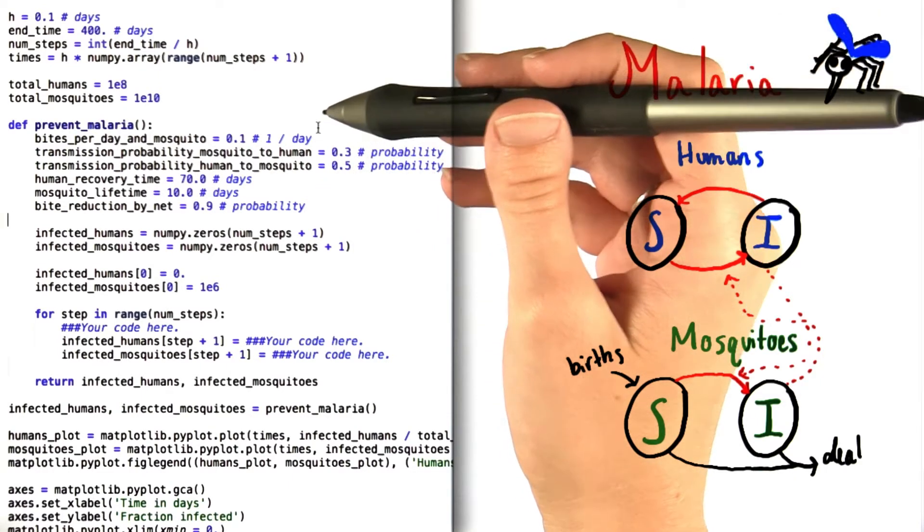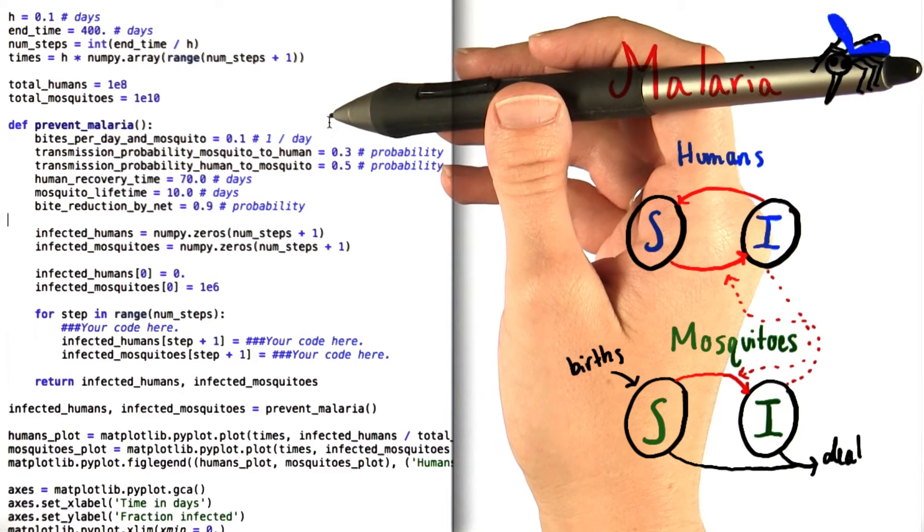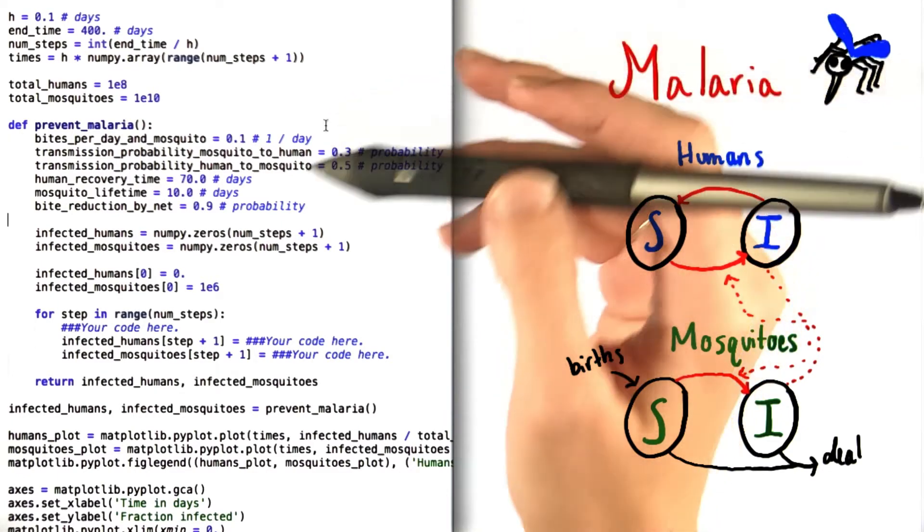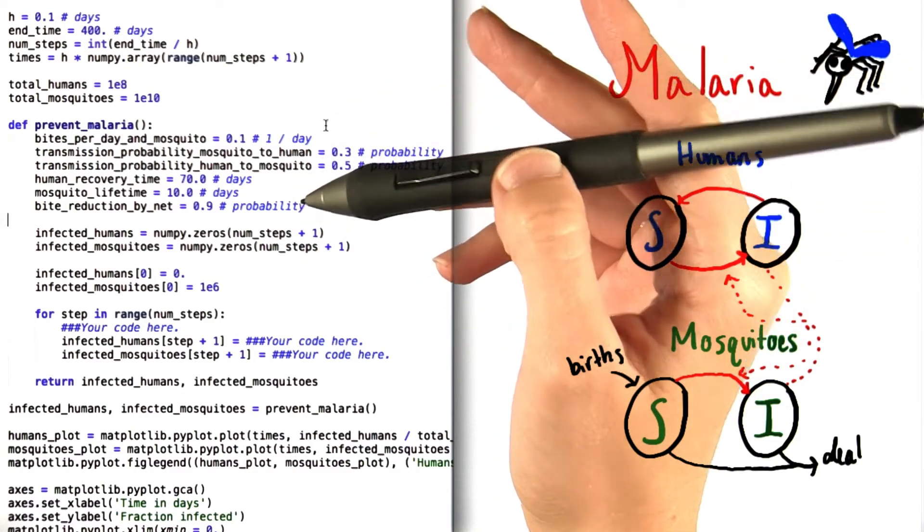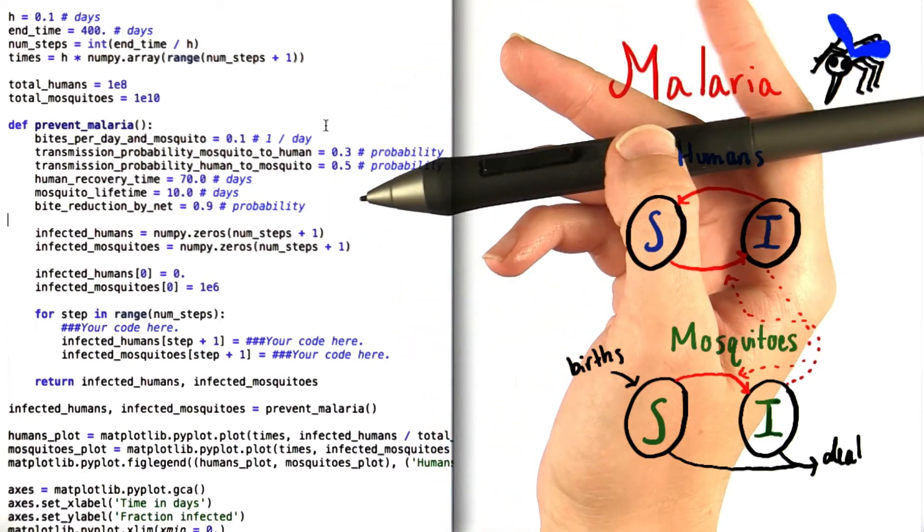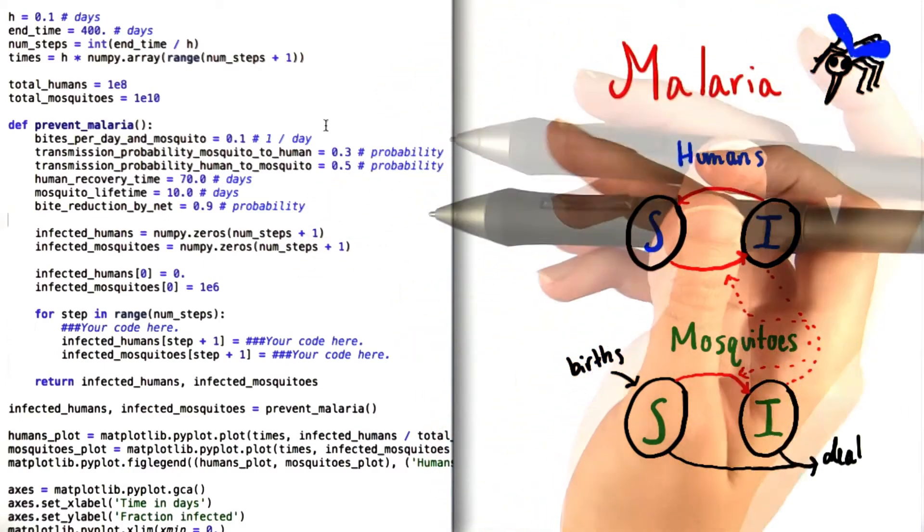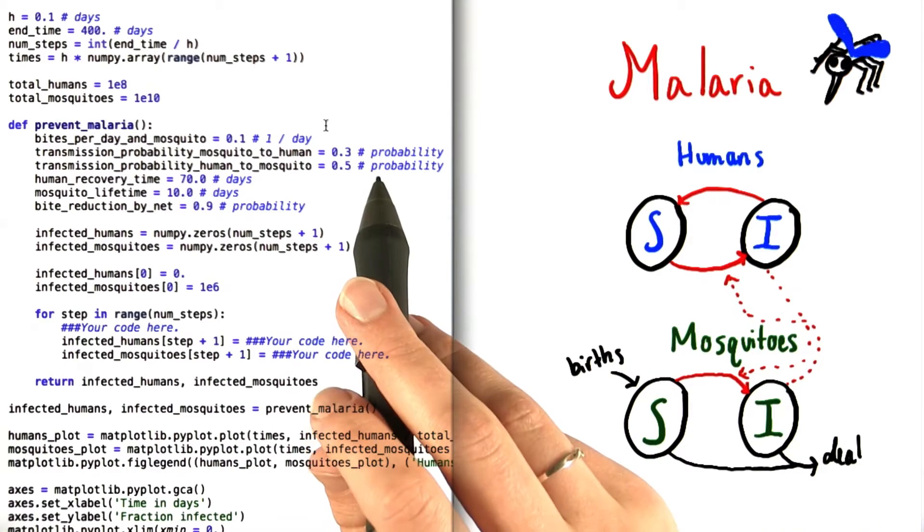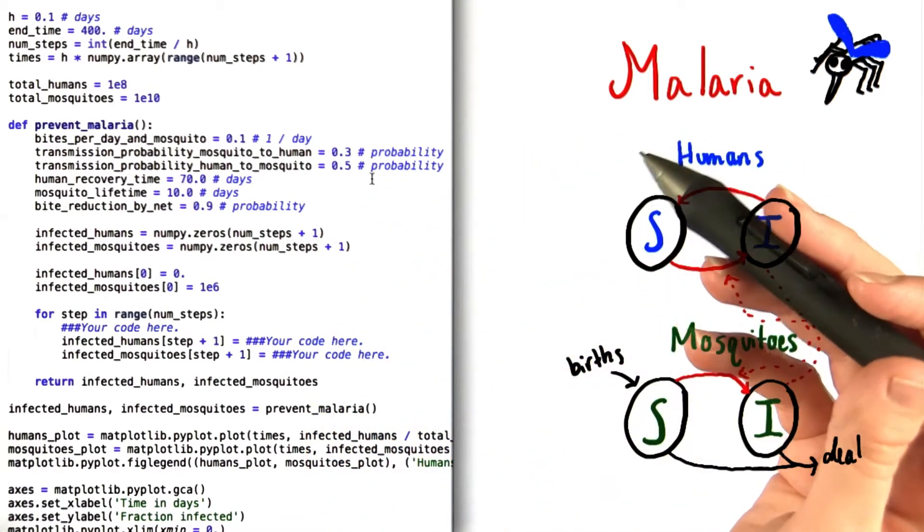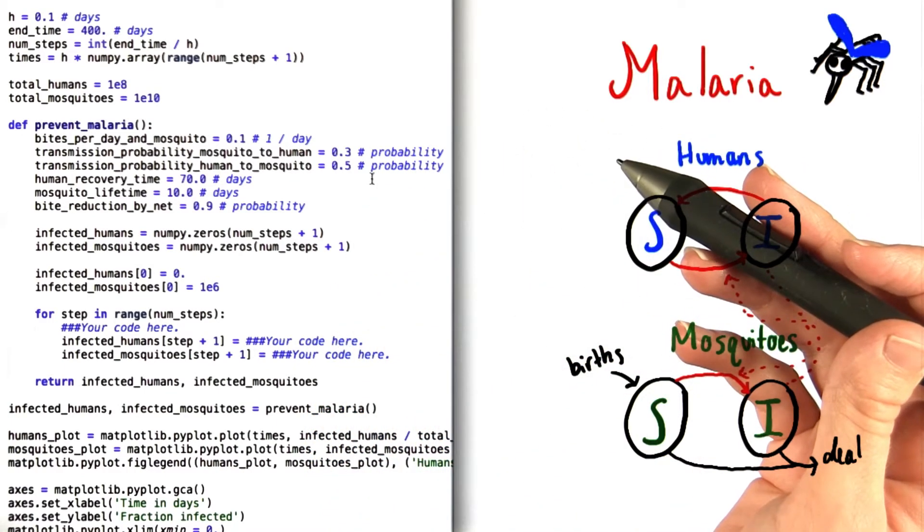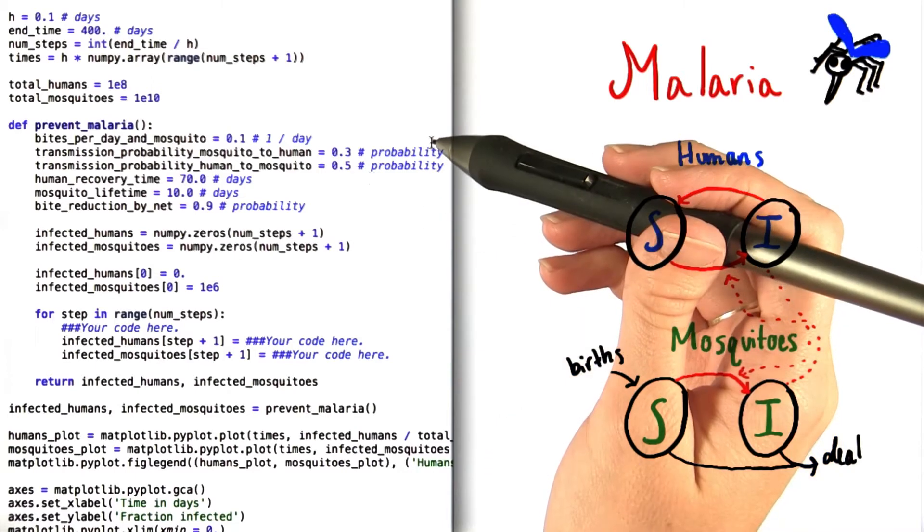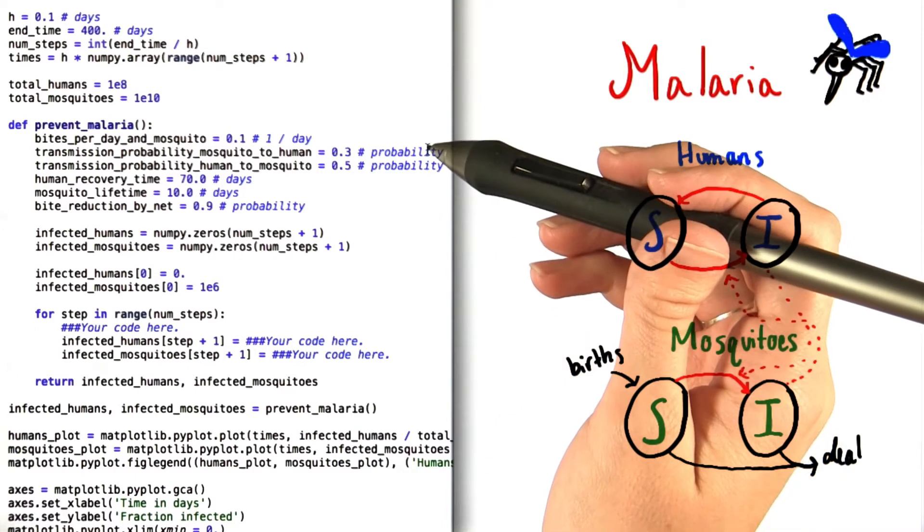Bites per day in mosquito tells us that every person gets bitten by each mosquito 0.1 times per day. When a mosquito bites a human, there's a chance of two different things happening that are of particular interest to us. If the mosquito has malaria, it can give the disease to the human, or if the human has malaria, then he or she can give it to the mosquito. The probability of either of these things happening is shown right here.